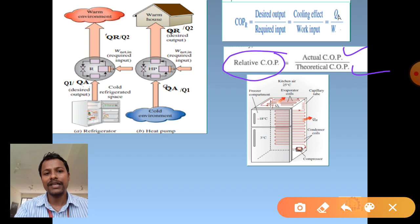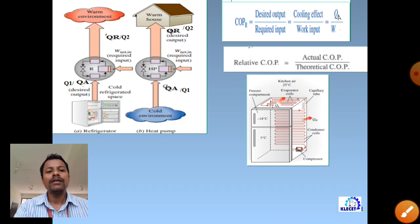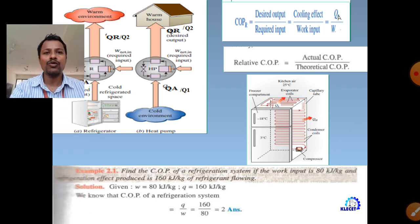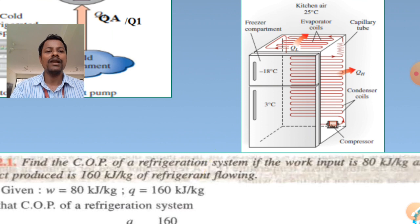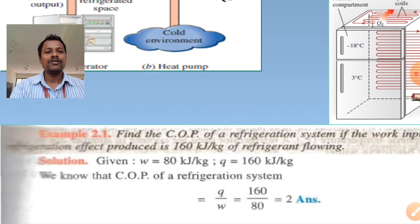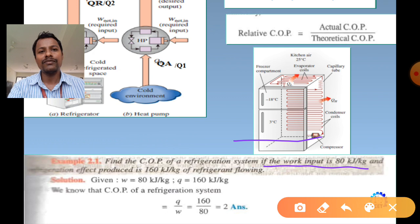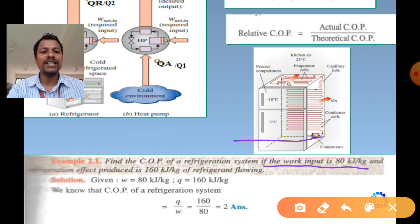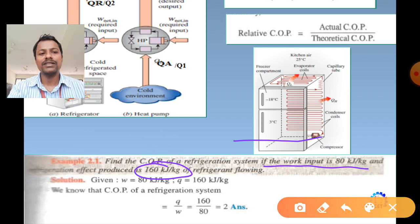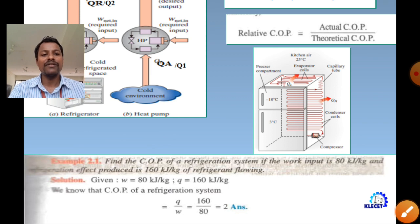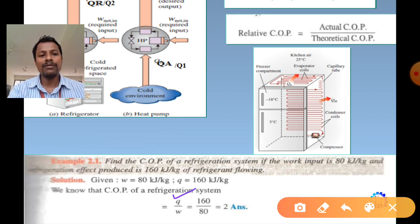Effects of boiler pressure, condenser pressure, and superheating are studied here as well. Vapor compression refrigeration cycle is essentially a reversed Rankine cycle, because the working fluid alternately changes phase from liquid to vapor and back, as in vapor power cycles. We will also demonstrate understanding of the operating principles of gas refrigeration, studying reversed Brayton cycle and reversed Carnot cycle.